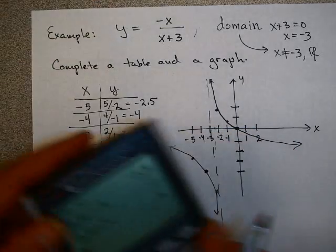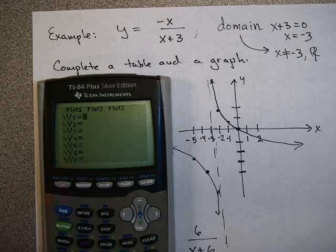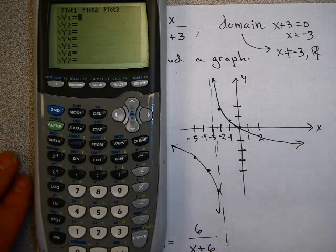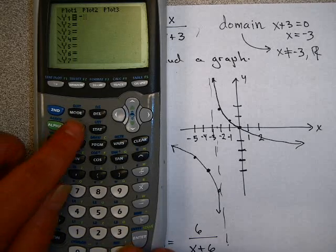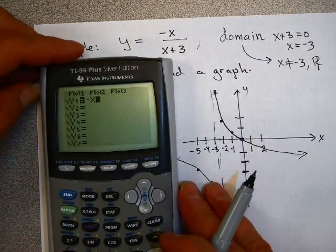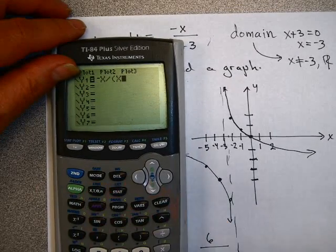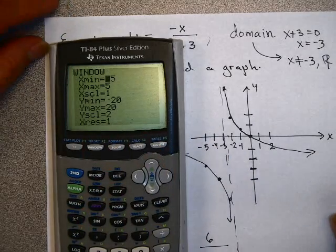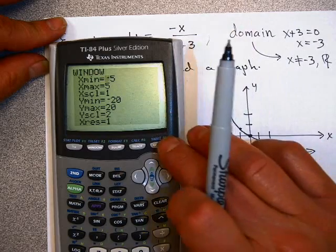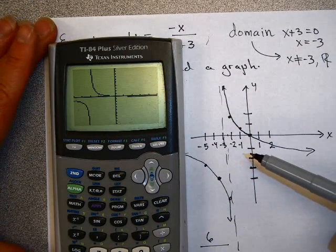Let's check this with the calculator. Going to y equals, clear the graph, and enter minus x divided by parentheses x plus 3 — remember to use the negative sign key for the minus. Set the same window as before and hit graph. Here's the graph, and it looks like the picture I drew by hand.